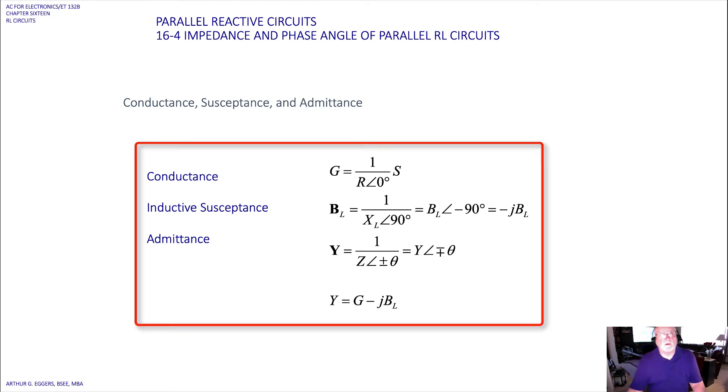So now we look at something called the conductance, inductive susceptance, and admittance. We can see mathematically what these look like. The conductance, of course, we've learned in the past is one over or the reciprocal of the resistance, and it has the units of Siemens.